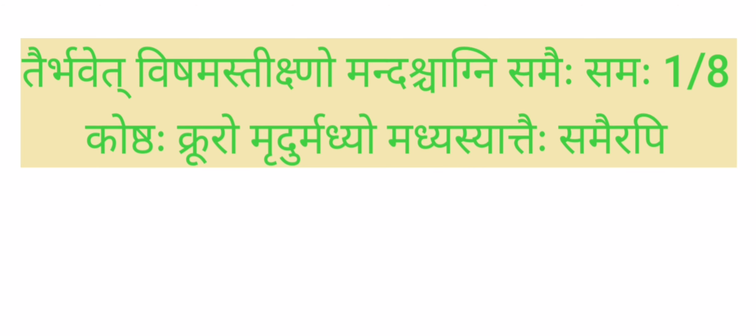Koshtha Krooryo Mrudur Madhyo — if Vada is dominant, it is Kroorha Koshtha. If Pitha is dominant, Koshtha will be Mrudhu. If Kabha is dominant, Koshtha will be Madhyaya Koshtha. And if Dosha is in a Sama Avastha, then also the Koshtha will be Madhyaya Koshtha.